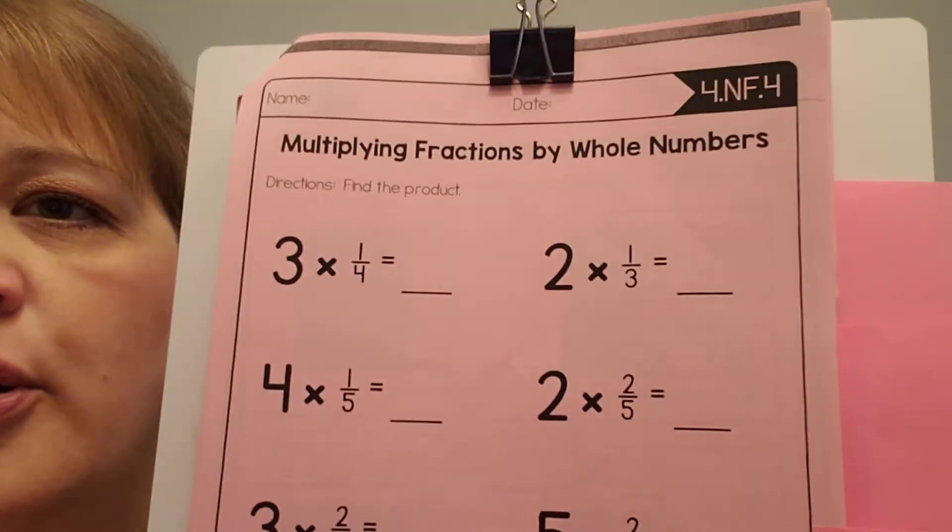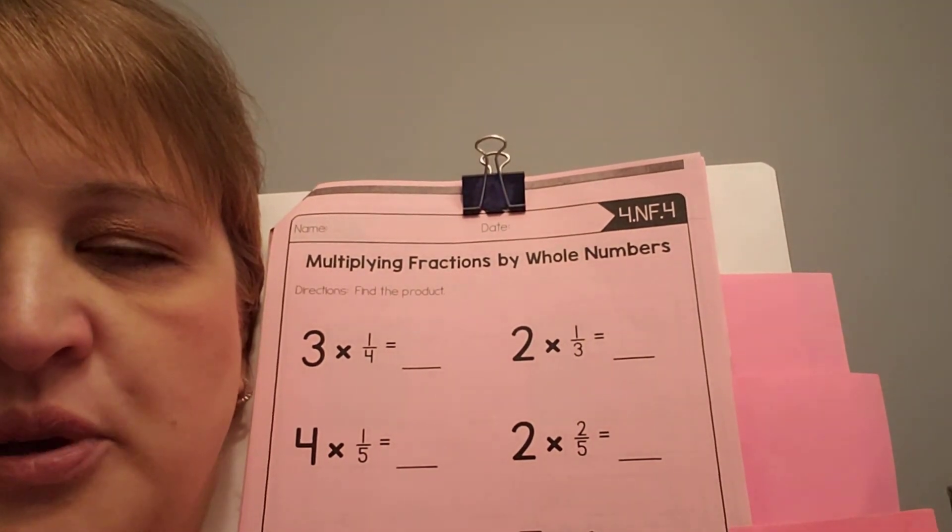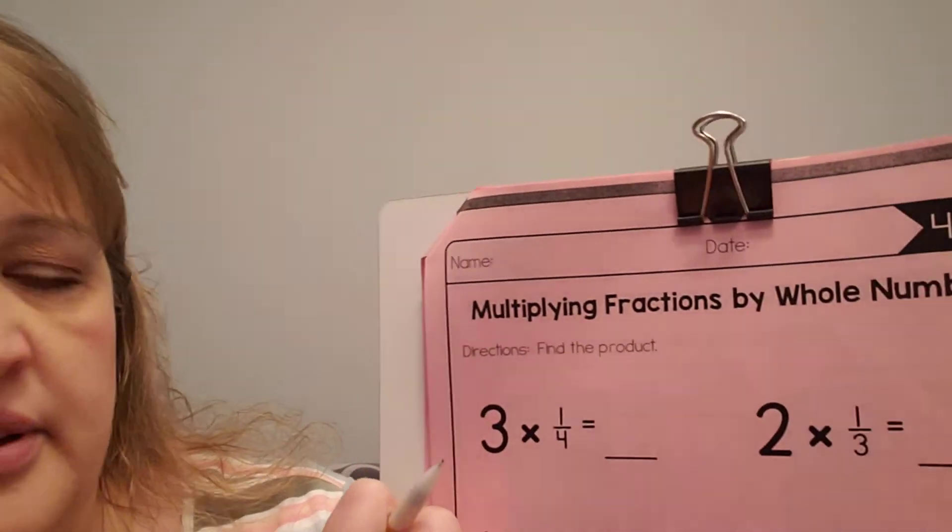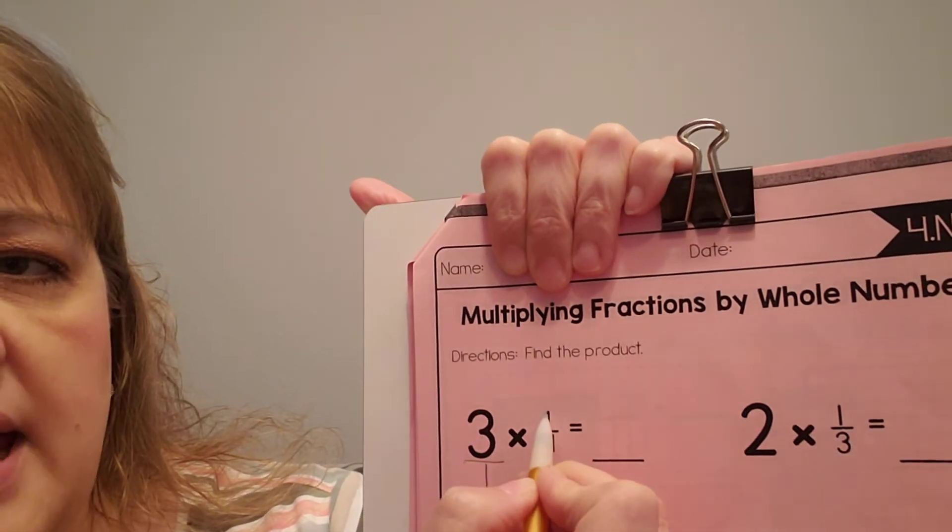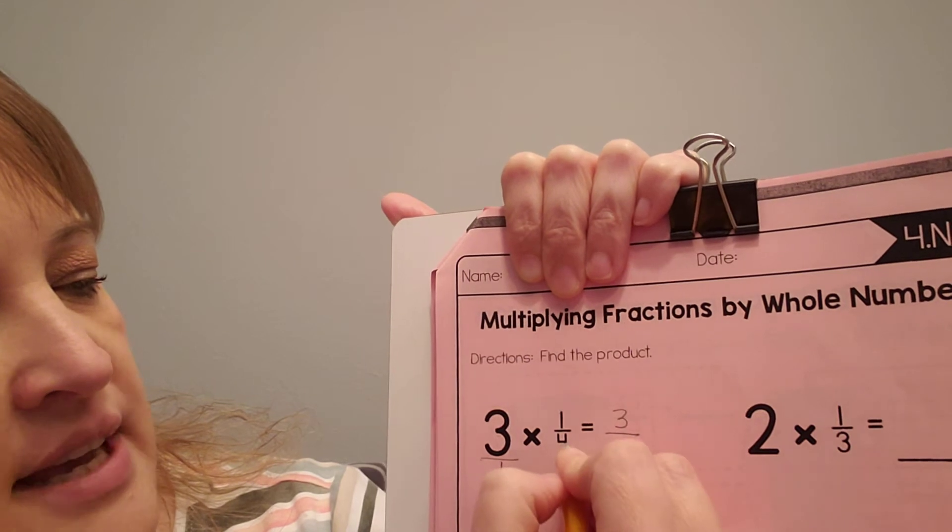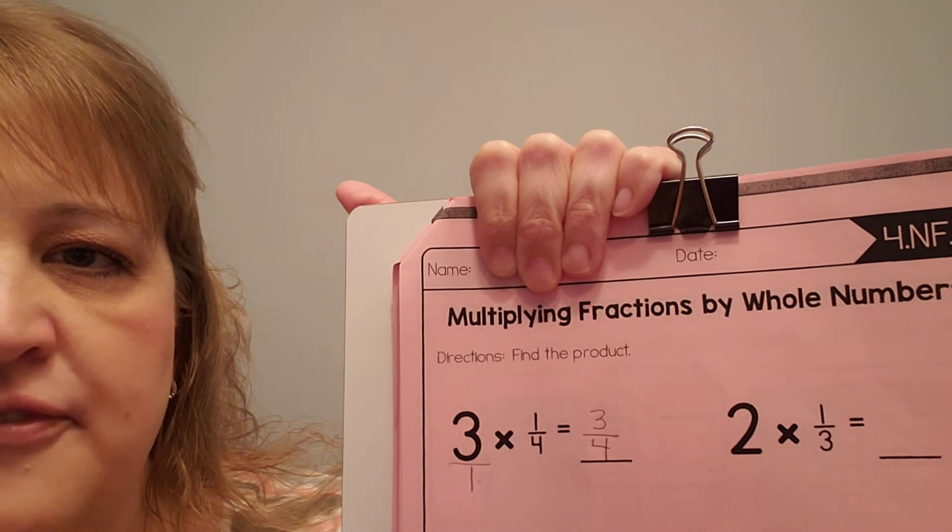All right. Turn just to the very next page. NF4. We're going to multiply fractions by whole numbers. All right. Now remember, when we multiply fractions, we have to put the whole number over 1. So we have 3 times 1 is 3 and 1 times 4 is 4. So our answer is 3 4ths.